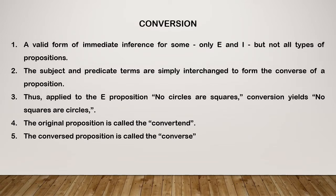So what is conversion? It is a valid form of immediate inference. It is applied only on E and I propositions. What do we do here? We simply interchange the subject term and the predicate term. For example, in the E proposition 'no circles are squares,' the subject is circle and the predicate is square. After conversion is applied to this E proposition, it will become 'no squares are circles.'